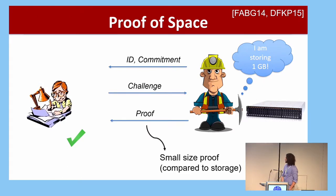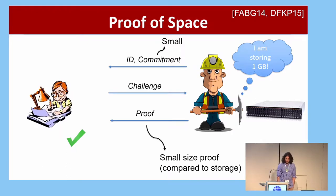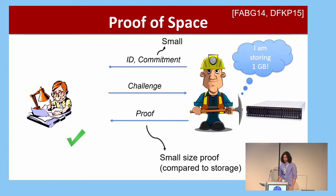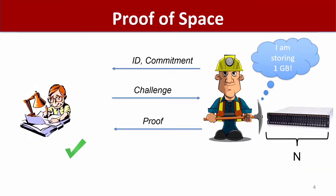As efficiency requirements, you require the proof and the commitment to be much smaller than the storage the prover claims to have, so the overall communication should be much smaller than the storage. The verifier should also run efficiently — if n is the amount of storage the prover claims to be using, then the verifier should run in polylog n time.